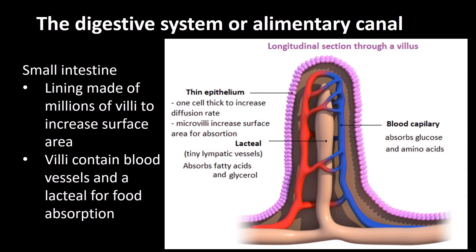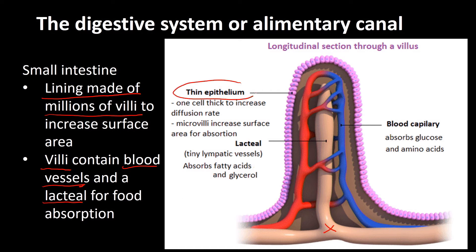The small intestine is specialized for absorbing food. Its lining is made of millions of tiny finger-like structures called villi — microscopic projections that increase the surface area so as much food as possible can be absorbed. Inside the villi are blood vessels and a structure called a lacteal. Together, the lacteal and the blood capillary absorb all the digested food. The epithelium lining the intestine is only a single cell layer thick, making it easy for food to pass through.